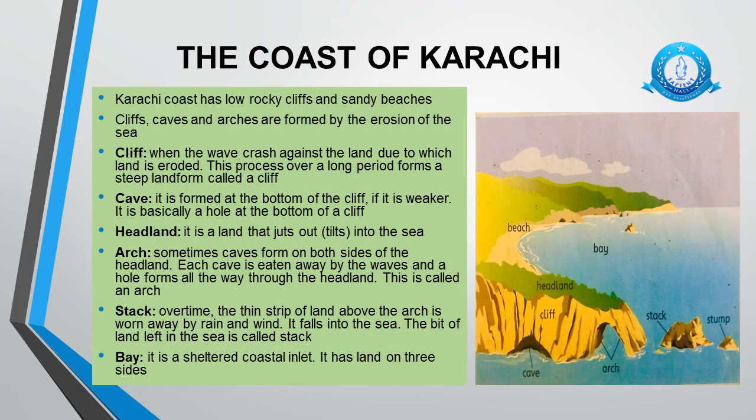Sometimes caves form on both sides of the headland. Each cave is eaten away by the waves and a hole forms all the way through the headland — this is called an arch. Over time, the thin strip of land above the arch is worn away by rain and wind, it falls into the sea, and the bit of land left in the sea is called a stack. A bay is a sheltered coastal inlet with land on three sides.